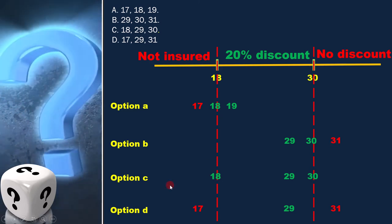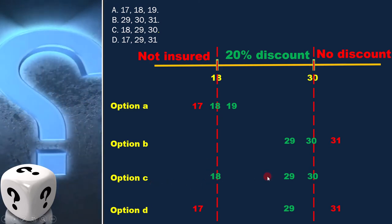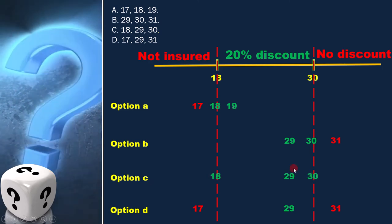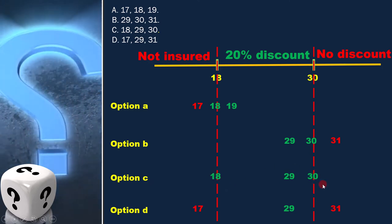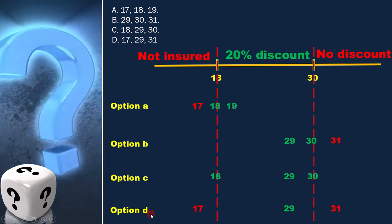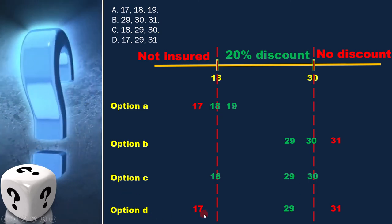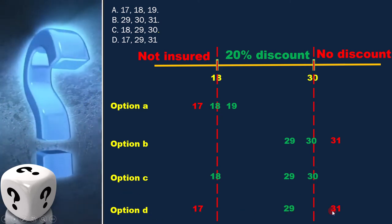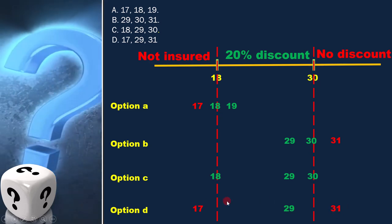In option C, 18, 29 and 30 are in the same class. In option D, 17, 29 and 31 are in different classes.